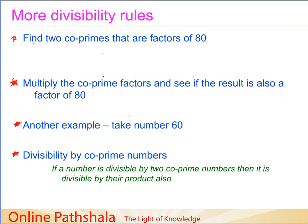In this lecture we continue our discussion on divisibility rules. We need to discover one more divisibility rule, and what we have to do is find any two co-prime numbers that are factors of a given number. Let us take 80 as our example.